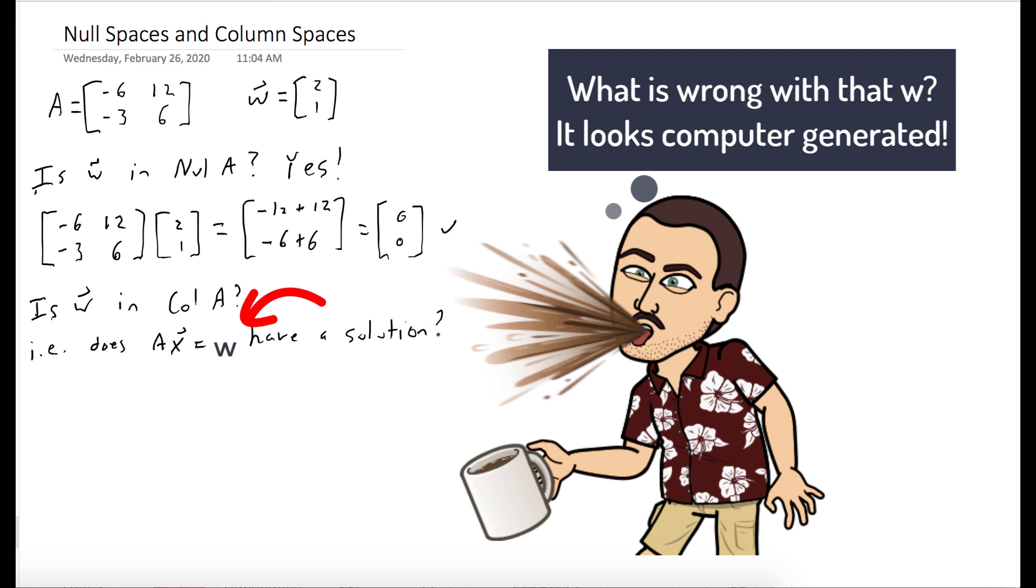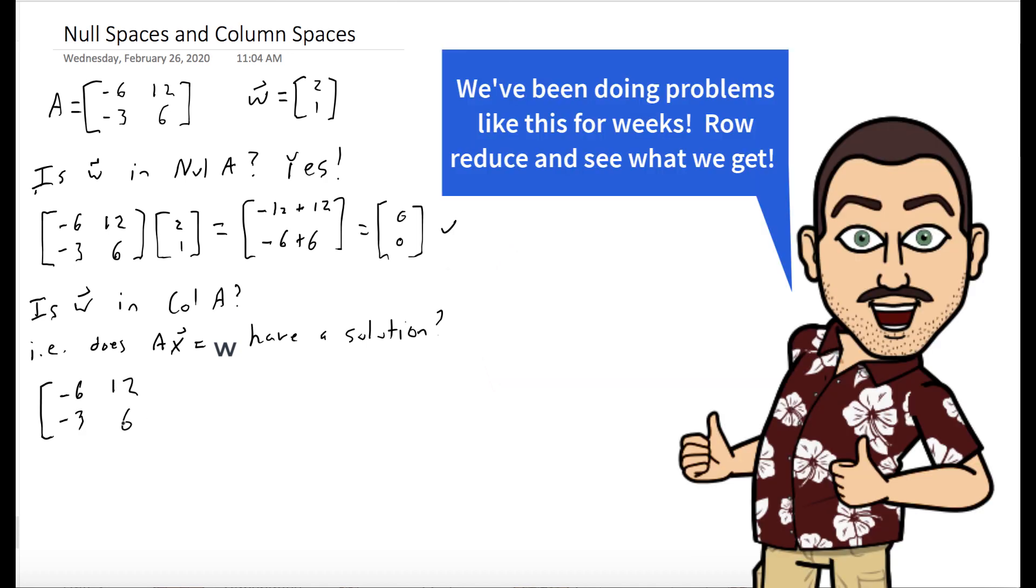And so what we do is we take an augmented matrix that has A, and then the last column is w, and we're going to row reduce and see what we get at the end. And here we see we have a row of all zeros at the end, and so Ax = w is consistent, so w is in the column space of A.